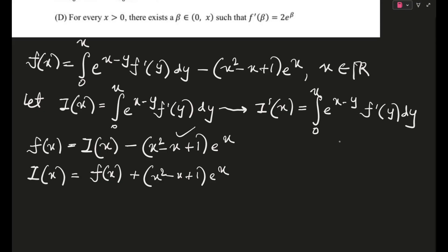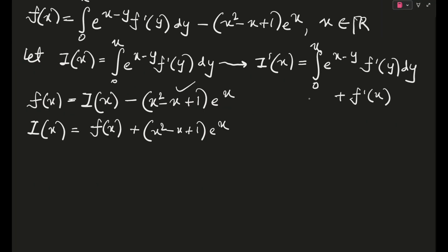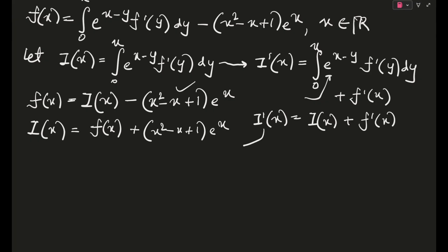We are pulling out eˣ in that particular term and differentiating — eˣ differentiated remains eˣ times the whole thing, and after that you get f'(x). So this comes out to be i'(x) = i(x) + f'(x). We can rearrange this as i'(x) − i(x) = f'(x).